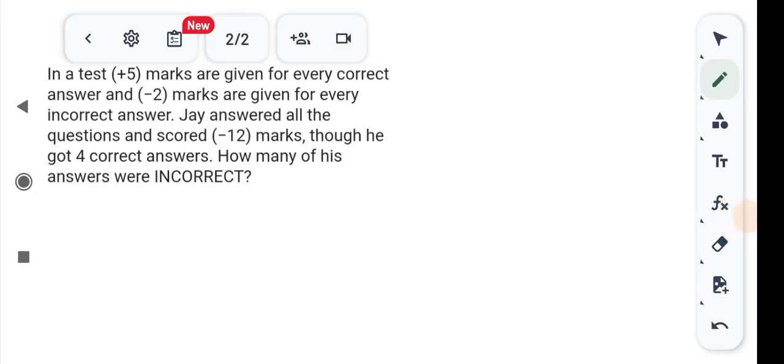In our test, plus 5 marks are given for every correct answer and minus 2 marks are given for every incorrect answer. Jay answered all the questions and he scored minus 12 marks, though he got 4 correct answers. How many of his answers were incorrect?